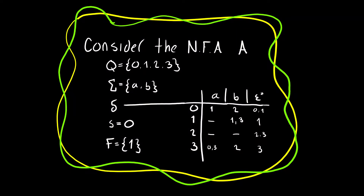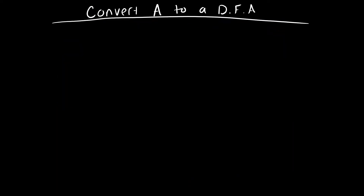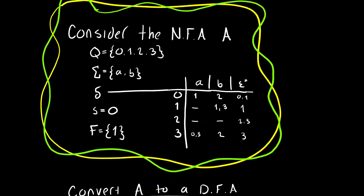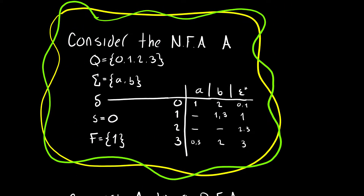Hello, this will be a quick example of converting a non-deterministic finite automata to a deterministic finite automata, or an NFA to a DFA. We're given a formal definition of a non-deterministic finite automata. How do we know that it's an NFA? Because it has epsilon — deterministic finite automata do not have epsilon as an input, but non-deterministic finite automata always have epsilon as an input.